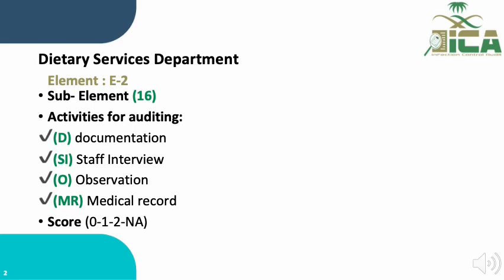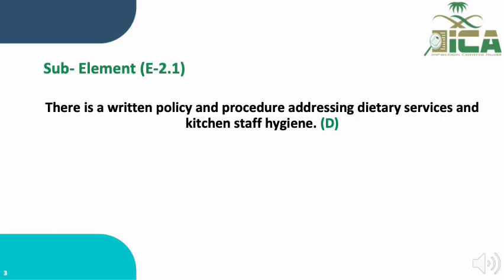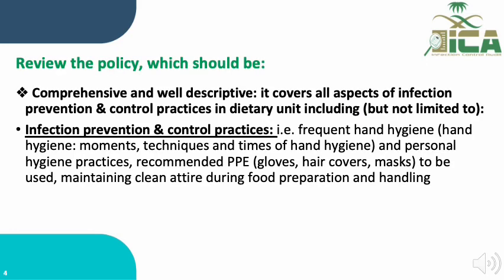Sub-element E.2.1 states that there is a written policy and procedure addressing dietary services and kitchen staff hygiene. This sub-element requires document review for scoring. When reviewing the document, we must review the policy constructed for the infection control program in dietary services, which should be comprehensive, well-descriptive, and cover all aspects of infection prevention and control practices in the dietary unit.